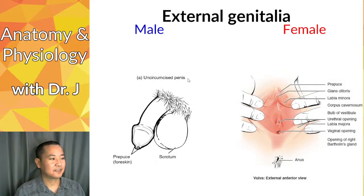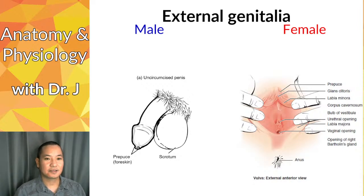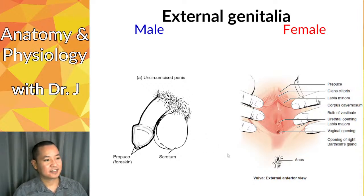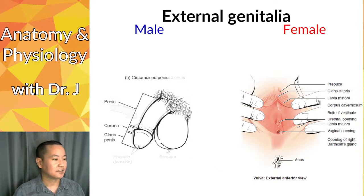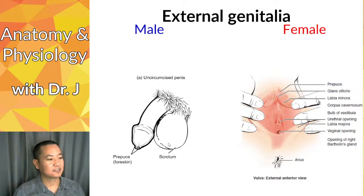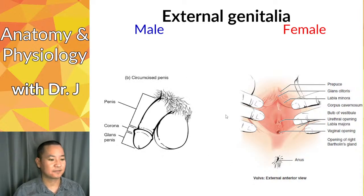Here we have external genitalia — the stuff you can see without any internal examination. For males, an uncircumcised individual has the prepuce, also called the foreskin, covering the glans of the penis. In a circumcised individual the glans penis is exposed. The female reproductive system's external genitalia will be covered in a future lecture.